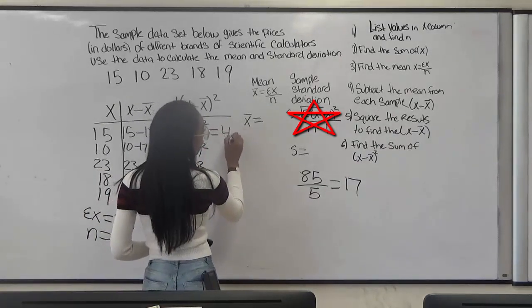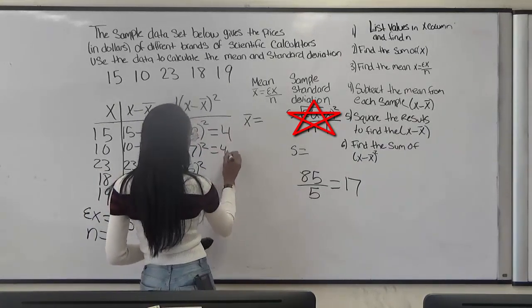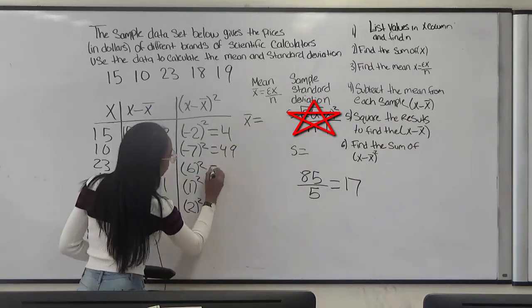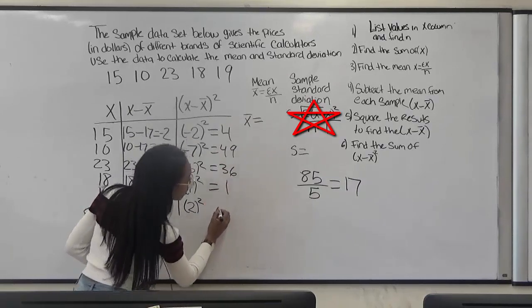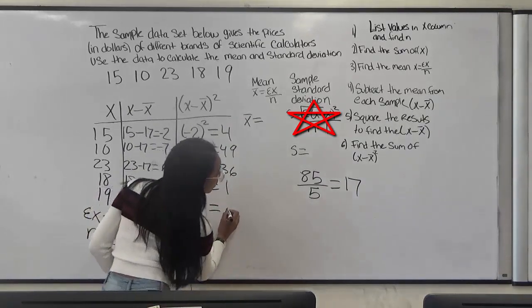So the answer to that is 4. The answer to this is 49. The answer to this is 36. The answer to this is 1. And the answer to this is 4.